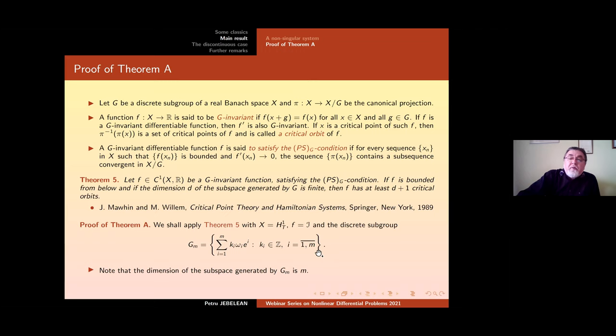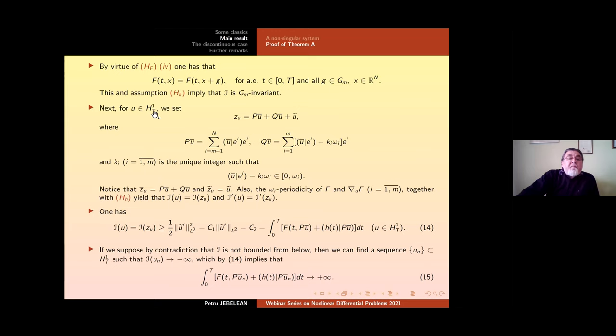One has the dimension of the subspace generated by G_m is m. And so we have only to, it remains only to prove that I under these circumstances is bounded from below and satisfies the PSG condition. First it is easy to see that I is G_m invariant. Now in order to prove that it is bounded from below and satisfies the PSG condition, we shall proceed as follows. For each u in H^1_T we shall modify its mean so that the periodicity to be involved and to keep the mean with respect to some components to keep it to be bounded.